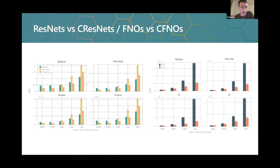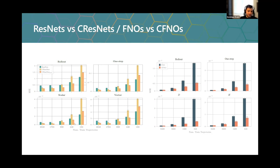A follow-up observation noted that on the left dataset, Clifford only becomes better than ResNet with more trajectories, while on the right (Maxwell), Clifford is better regardless of trajectory count, with a much larger margin. The question was why performance differs so much between datasets and why ResNet is worse in the low-trajectory regime for one dataset but Fourier is not worse in the other. The presenter said this would be naturally answered by the second paper.